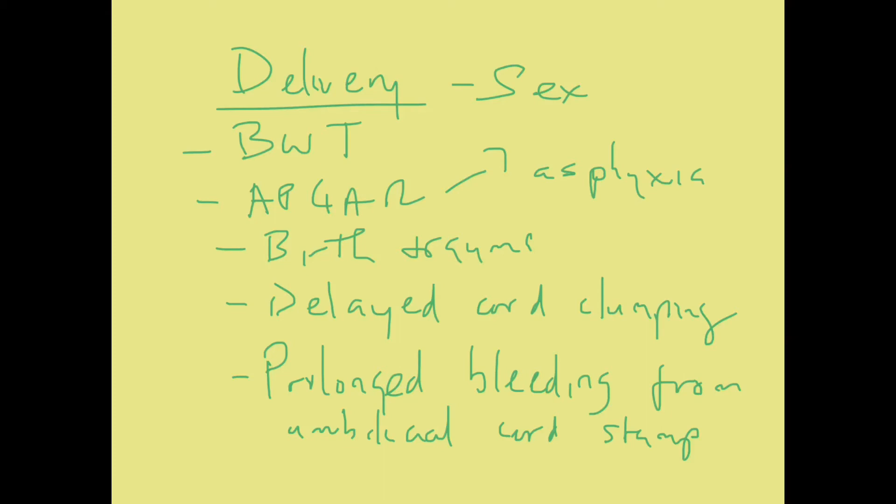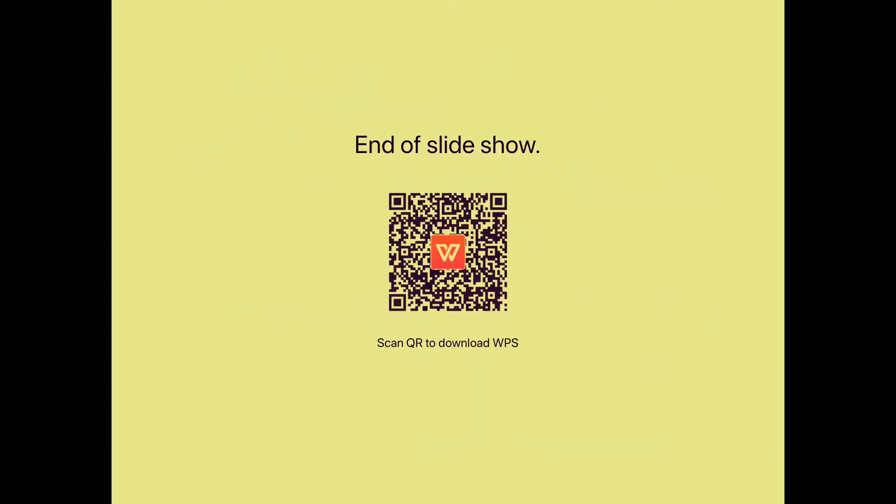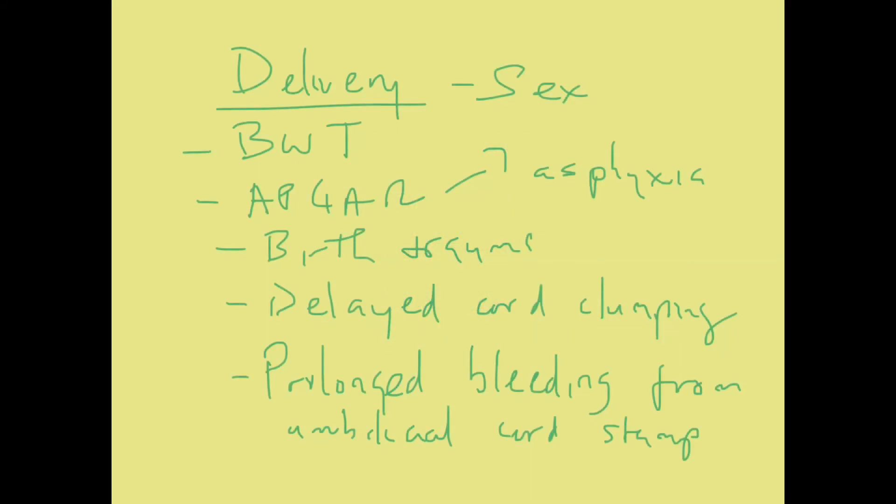Delayed cord clamping means we are allowing blood to flow from the placenta to the baby. Delayed cord clamping can increase the volume of blood for the baby, and with increased volume, there will be increased hydrostatic pressure, which can cause edema. Sometimes patients deliver at home before reaching the hospital, and if they delay cord clamping, there can be significant blood transition from placenta to baby, which can predispose to edema.